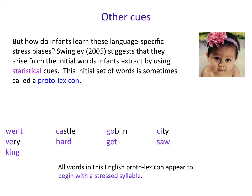So here's a question: infants have these language-specific stress biases — how exactly do they learn them? Because they have to learn them since they differ by language. A study by Swingley in 2005 suggested that these biases arise from the initial words that infants extract by using statistical cues like transitional probability. They use statistical cues to get this initial set of words — a seed pool of words sometimes called a proto-lexicon. A true lexicon is word forms connected to word meaning, but this is just word forms, so it's a proto-lexicon, not yet connected to meaning — a collection of words statistically extracted.